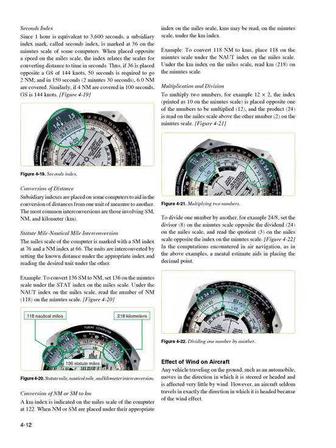Seconds index: since 1 hour is equivalent to 3600 seconds, a subsidiary index mark called the seconds index is marked at 36 on the minutes scale of some computers. When placed opposite a speed on the miles scale, the index relates the scales for converting distance to time in seconds. Thus, if 36 is placed opposite a GS of 144 knots, 50 seconds is required to go 2 nautical miles, and in 150 seconds (2 minutes 30 seconds), 6.0 nautical miles are covered. Figure 4-19.